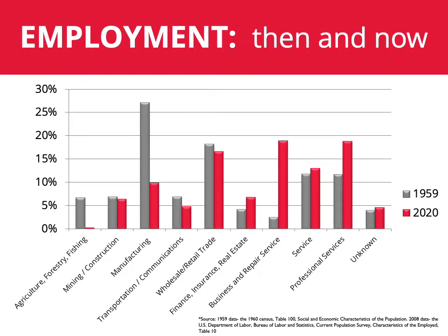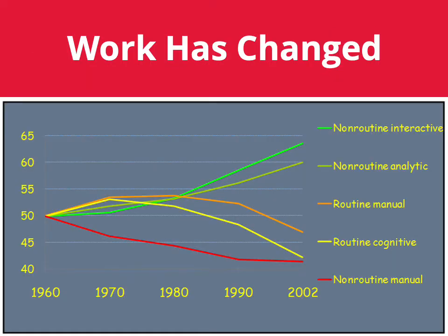When looking at employment opportunities when this model was thriving, you can see it was supporting the type of workforce needed at the time. Major portions of the population were in manufacturing or wholesale and retail trade, with very few in fields of finance, communication, etc. Today, these employment opportunities have almost flipped, with business, professional services, and even jobs that didn't exist 20 years ago leading the pack. This change is also reflected in the types of work happening in the modern workplace: non-routine manual labor is dropping off, where interactive and analytic non-routine types of work, heavily reliant on problem solving, are much more prevalent.